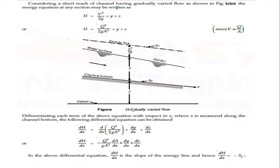The total energy head H at any section equals the velocity head plus flow depth plus datum elevation: H = V²/(2g) + y + z. Replacing velocity using Q = AV, so V² = Q²/A², gives H = Q²/(2gA²) + y + z. To find the water surface slope, differentiate this equation with respect to x.